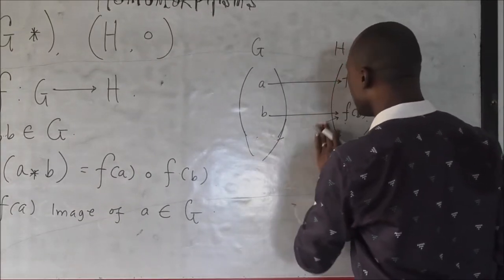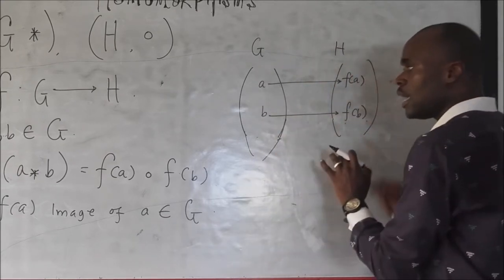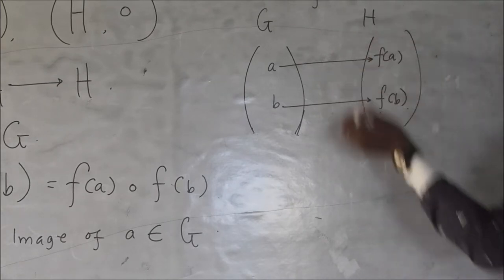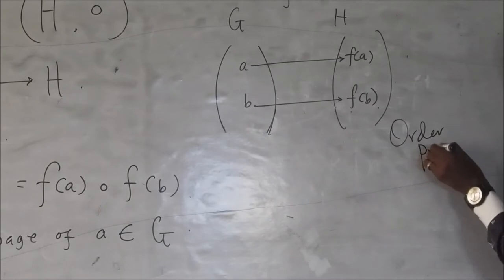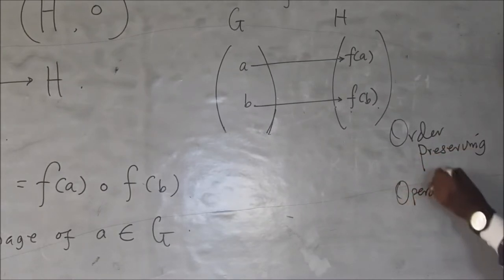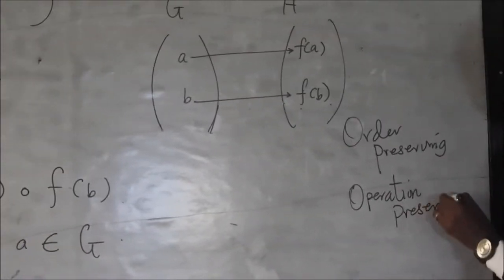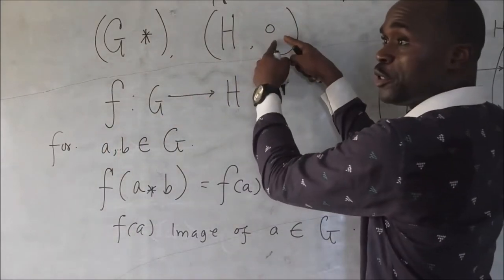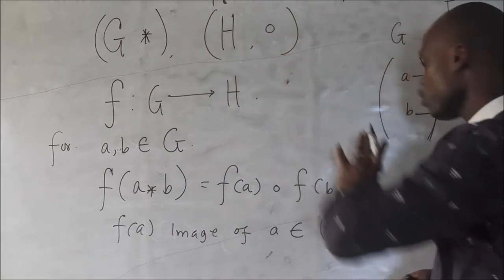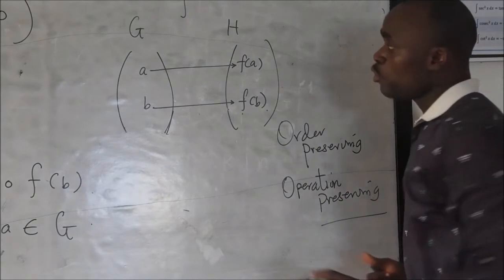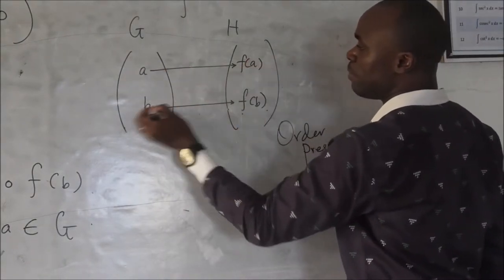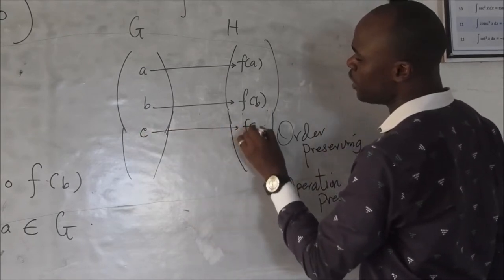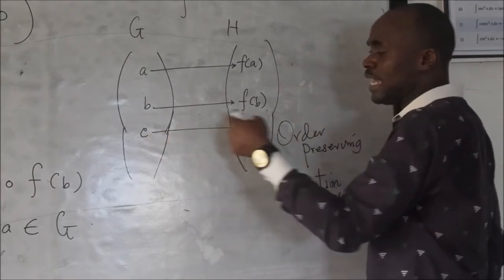When we have something of this nature where it is one-to-one, and you can also have an inverse mapping, we call F a homomorphism that is operation-preserving. What we have in operation-preserving is what you see here: you are using one operation, and using the homomorphism, here you are using the other operation, and the operation is kept intact. So we say it is operation-preserving. It maps elements from G to H, and it maps the identity here to F of E, which will be the identity element of H.